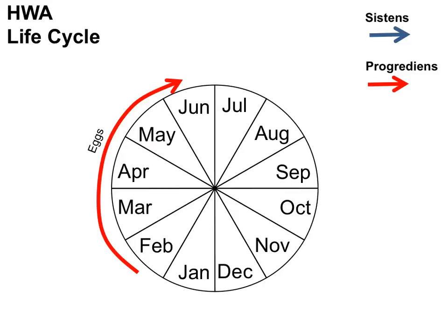The eggs for the progrediens generation are laid in the late winter and early spring in a woolly mass. What hatches out of the eggs are crawlers or first instar nymphs. Just like the elongate hemlock scale, these are the dispersal stage — they crawl on their own or are dispersed by wind or animals like birds, deer, or humans. In HWA's case, the crawlers settle at the base of the youngest branches they can find. They stick their stylet into the stem at the base of the needles and feed on the xylem-ray parenchyma cells. Once the crawlers are settled, they never move again.